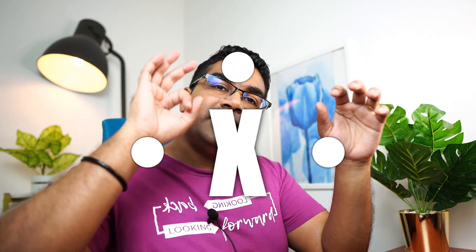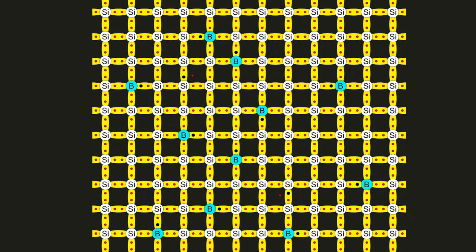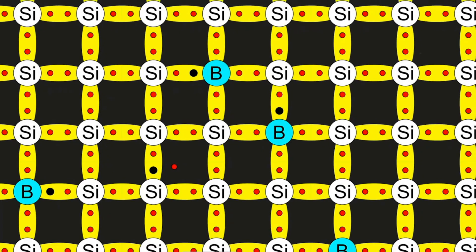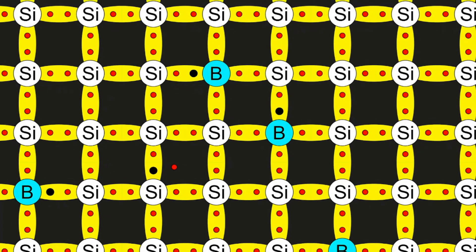In order to form a P-type semiconductor, we add an atom that has only three valence electrons. Silicon has four valence electrons, so whenever we add a foreign atom that only has three valence electrons, this is what it is going to look like. The example here uses boron. If we add boron into the structure of silicon, wherever the boron atom is bonded with the silicon atoms, there will naturally be one hole.